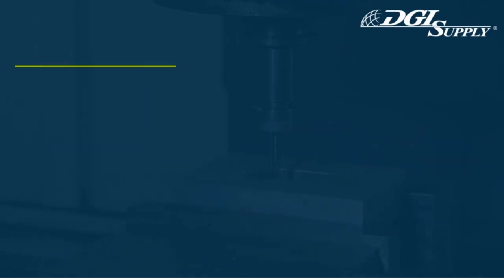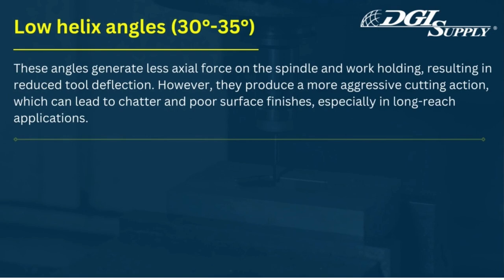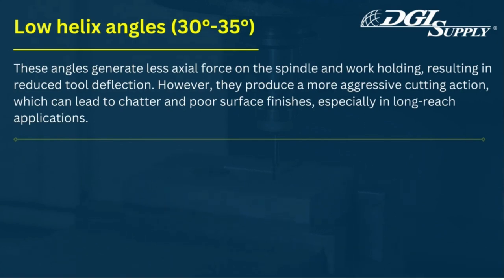Low helix angles, 30 degrees to 35 degrees. These angles generate less axial force on the spindle and work holding, resulting in reduced tool deflection. However, they produce a more aggressive cutting action, which can lead to chatter and poor surface finishes, especially in long-reach applications.